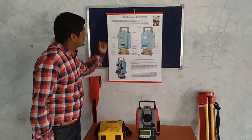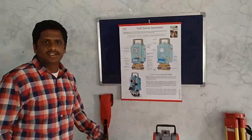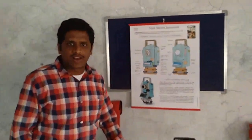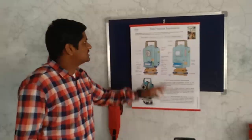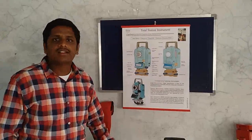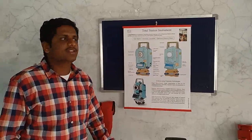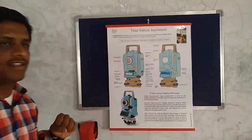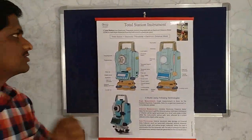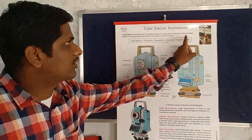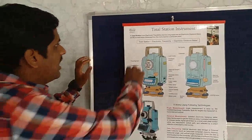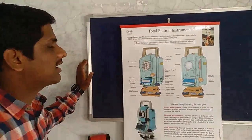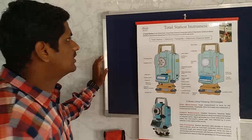First, what is the total station? Total station is an electronic theodolite. It is combined with two instruments: one is electronic distance meter, and another one is theodolite.